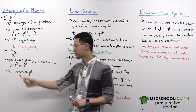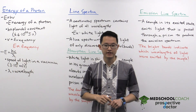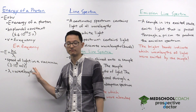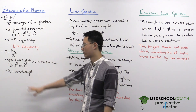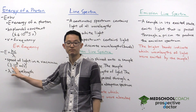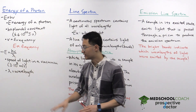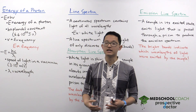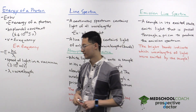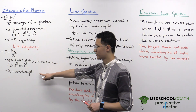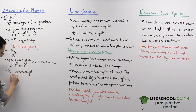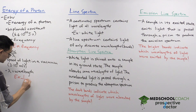The next equation is E equals hc over lambda. H is still Planck's constant. C is the speed of light specifically in a vacuum — 3 times 10 to the 8 meters per second. It's important that this is in a vacuum because if light is in any other medium, it is slower. Lambda stands for wavelength, and again we have another important relationship: the energy of a photon is inversely related to the wavelength of the light.